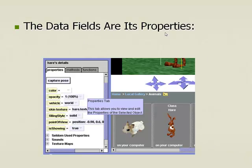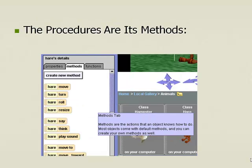The data fields are its properties, its variables. For example, you've got the color of the Hare — you can make it red or purple. You've got the opacity of the Hare — if you want to make it see-through, you can change that. These are the data fields, the properties, the variables for the Hare. Likewise, you also have procedures — the procedures are the methods. The Hare has the following methods: move, turn, roll, resize. We can even create a custom method using this button right here.